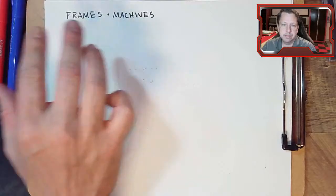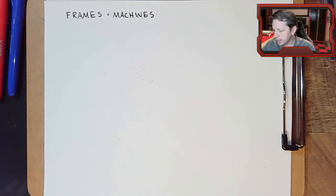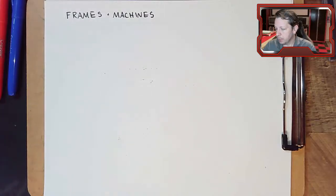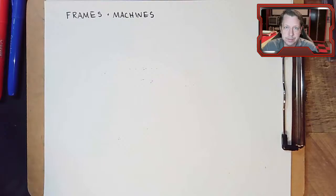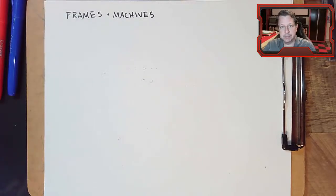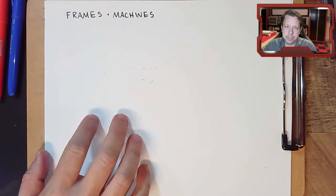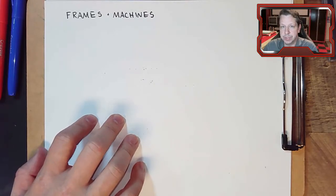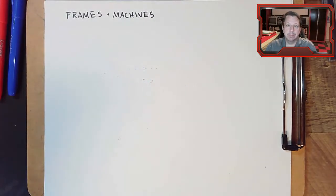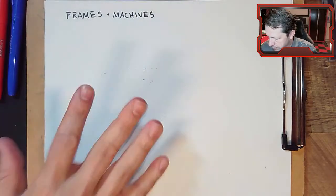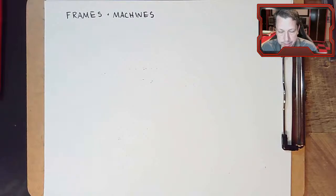We have to be careful not to think of frames and machines as trusses. They might look like trusses and may even have some of the same features, but sections of them may behave like trusses. We have to keep them separate as far as how we handle frames and machines versus trusses. Frames and machines are grouped together because they're handled the same way.